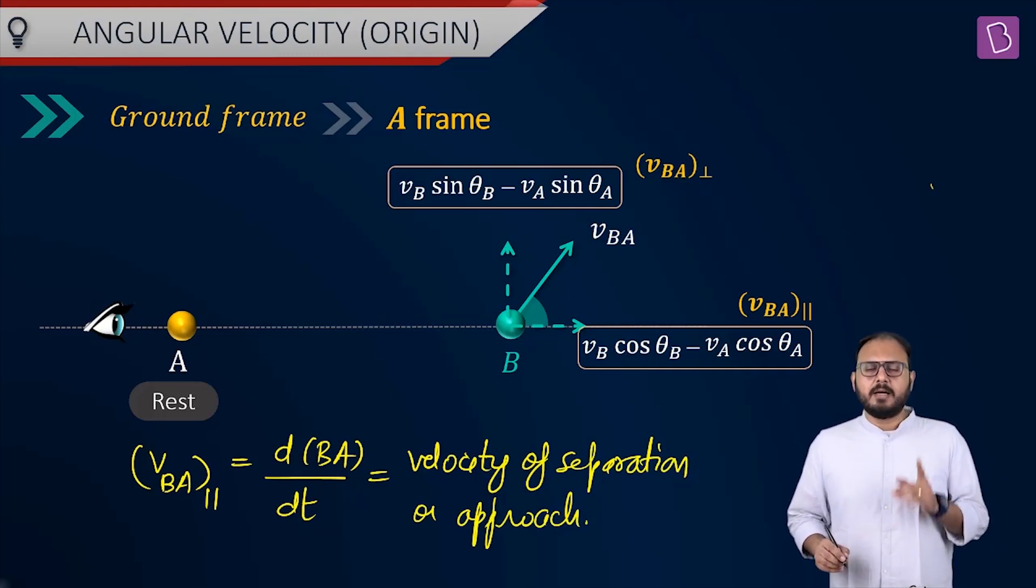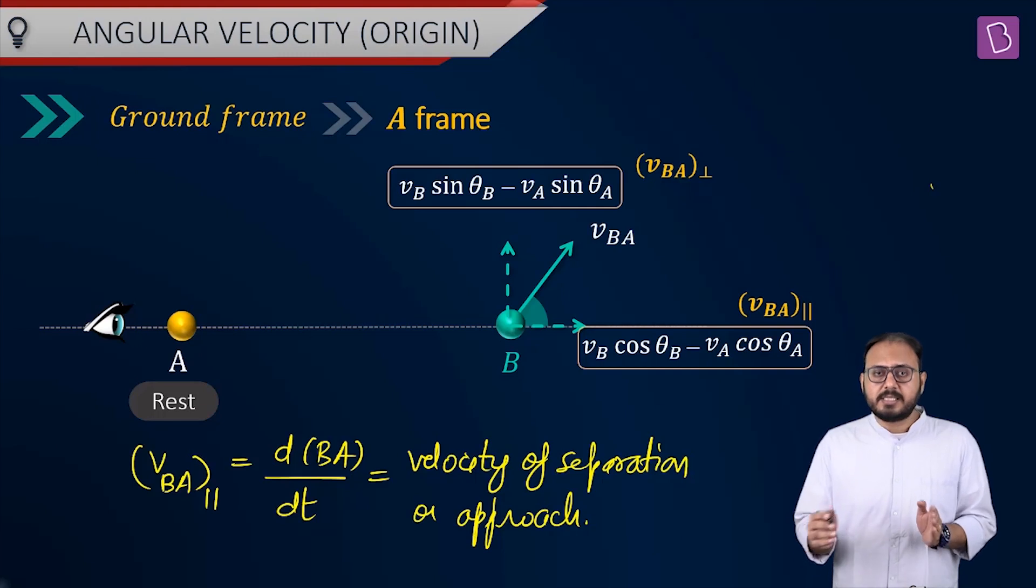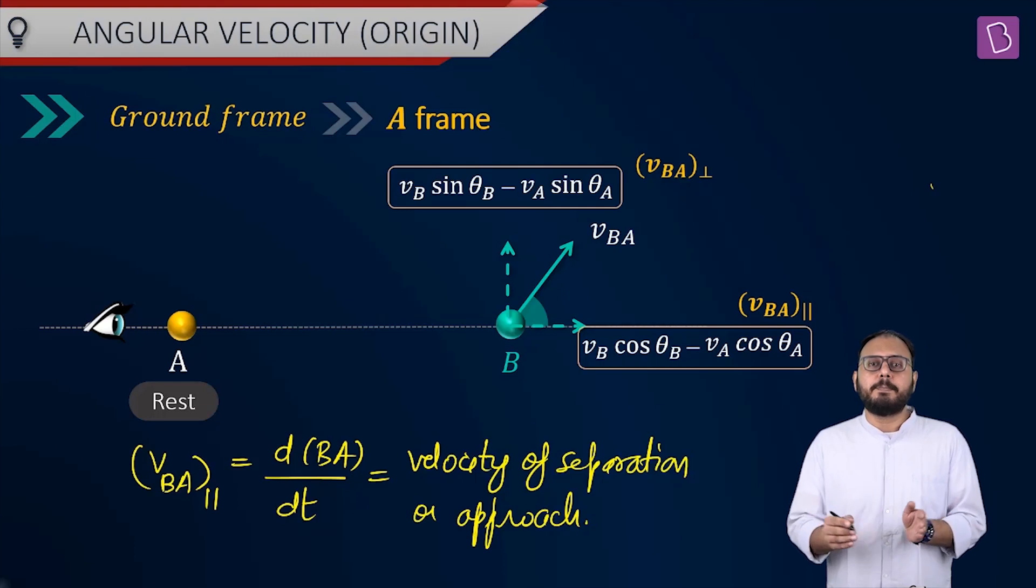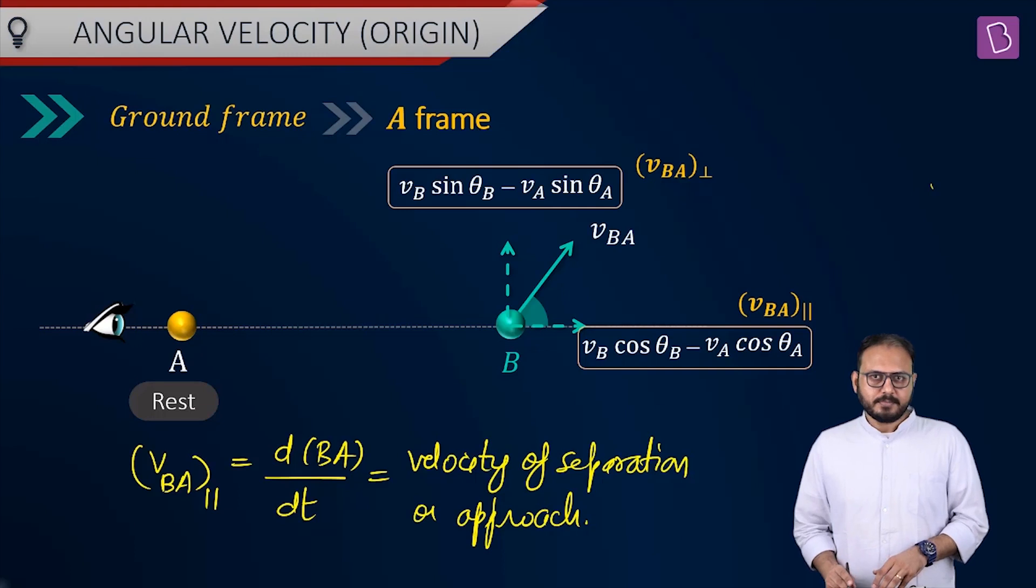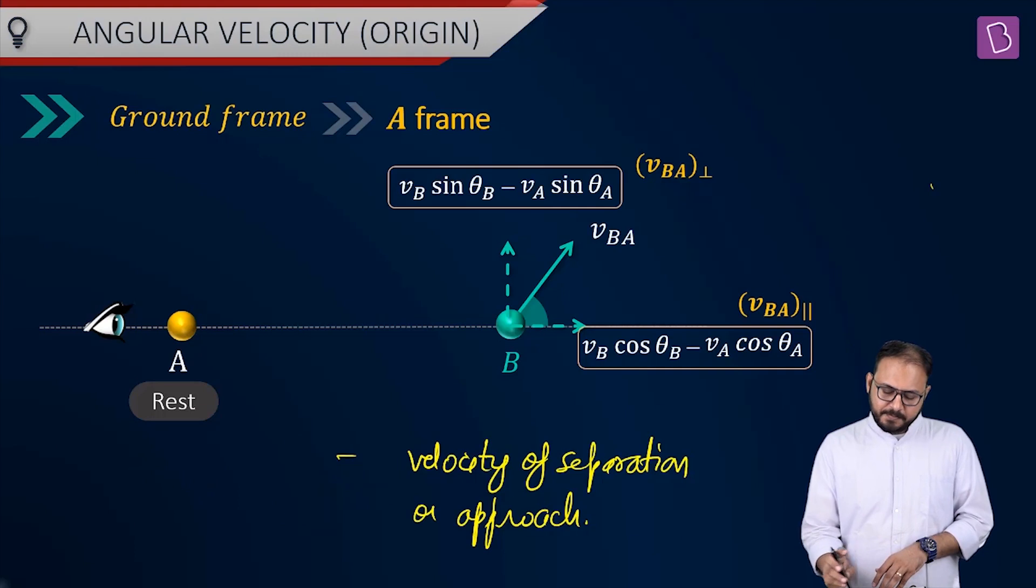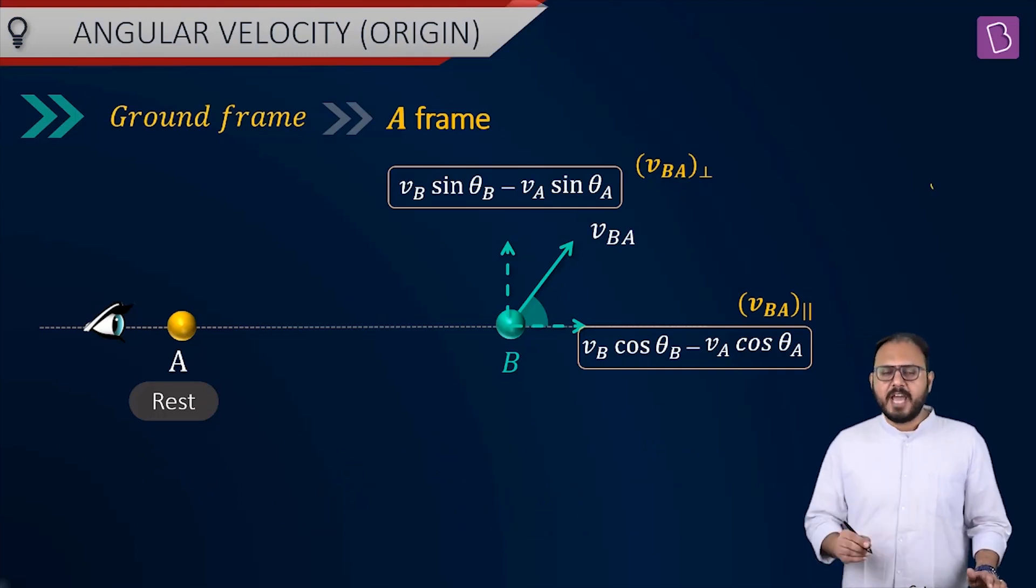was nothing but velocity of separation or the velocity of approach. vba parallel, the relative velocity component along the line joining them is nothing but the rate at which their separation changes. If the separation increases, it's the velocity of separation. If the separation decreases, it's the velocity of approach. Do you recall this? Yes, sir. We recall this. What's the point? The point is, my lord, I left the vba perpendicular component. And today, I will do justice to it.